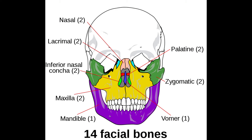The facial skeleton includes a total of 14 bones: mandible 1, maxilla 2, inferior nasal conchae 2, lacrimal 2 bones, nasal 2 bones, palatine 2, zygomatic bones 2, and vomer bone 1.